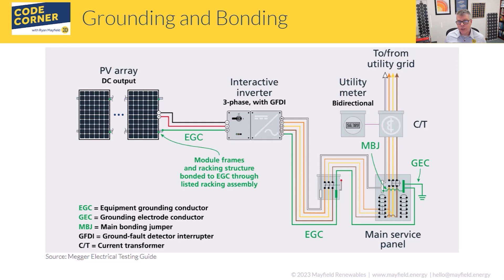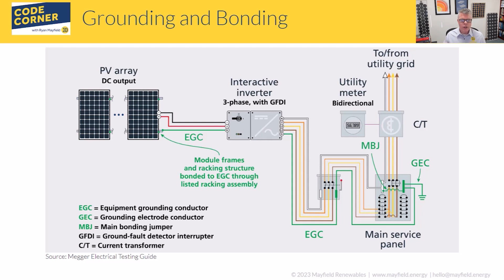Those are terms you'll see quite a bit relating to grounding and protection. We also have the GFDI — ground fault detector interrupter — which is an integral part of inverters. When talking about ground faults, we have ground fault interrupters, and we'll show where that comes into play in the next couple of slides. Also shown for completeness is the CT — the current transformer — used when measuring current on the metering system, not directly related to grounding.